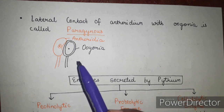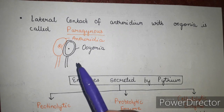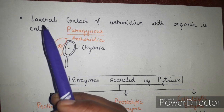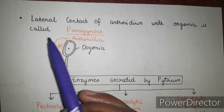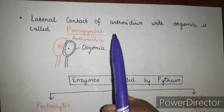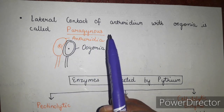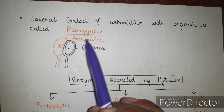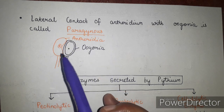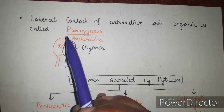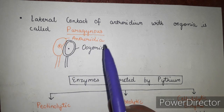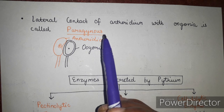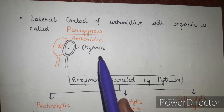An important point about Pythium: the lateral contact of the anthridium with the oogonia is called the paragynous condition. In Pythium, you will observe this paragynous condition because there is lateral contact of the anthridium along with the oogonia.